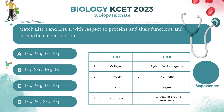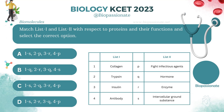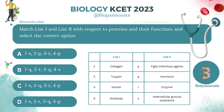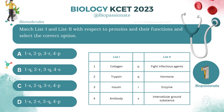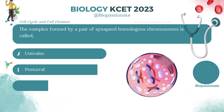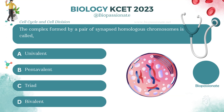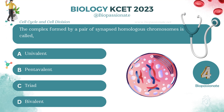Match list 1 and list 2 with respect to proteins and their functions and select the correct option. Answer: Option D. The complex formed by a pair of synapsed homologous chromosomes is called what? Answer: Bivalent.